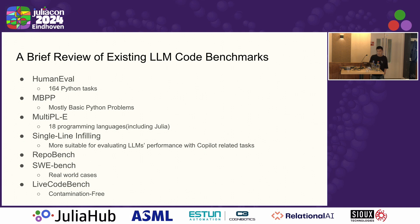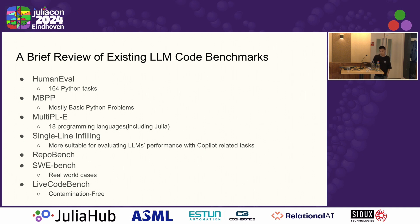Let's first give a brief review of existing code benchmarks. The first, maybe the most popular one, is HumanEval. It contains 164 Python tasks. And another one is MBPP — the name stands for Mostly Basic Python Problems. We also have MultiPL-E, which is a translation of the above two problems into 18 programming languages, including Julia. For other tasks, like single line filling, which is suitable for Copilot-related tasks — meaning code completion — and also RepoBench, SWE Software Engineer Benchmark for real-world GitHub-related cases, and also LiveCode Benchmark.